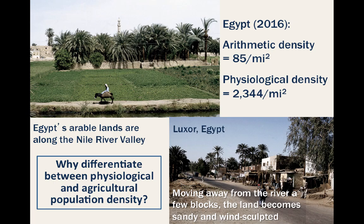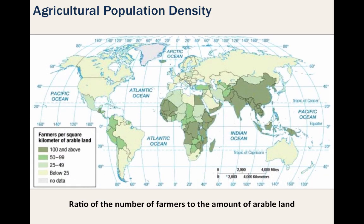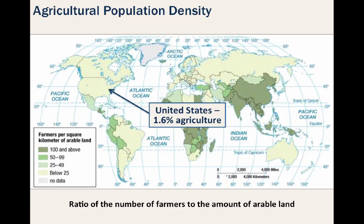In Singapore, virtually nobody is involved with agriculture as their means of income or survival. And then there's agricultural population density, which is the ratio of farmers per unit of arable land. Physiological density tells you the total number of people per square mile of arable land, but it does not differentiate between those working the land and those who are not. Agricultural density goes a long way to show us the less developed countries with a higher percentage of their workforce involved in farming, and the more developed countries whose people primarily work in services. For instance, in the United States, less than 2% of the population is involved in agriculture.